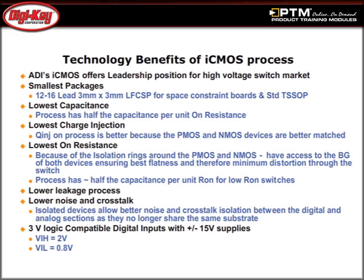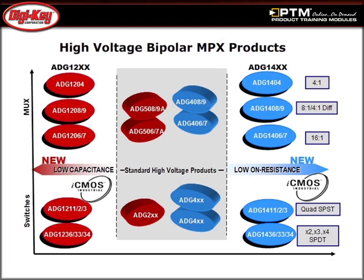Learn about the iCMOS manufacturing process that combines high voltage silicon with submicron CMOS and complementary bipolar technologies. Read about the ADG-12X family, which is designed for the lowest possible capacitance and charge injection.